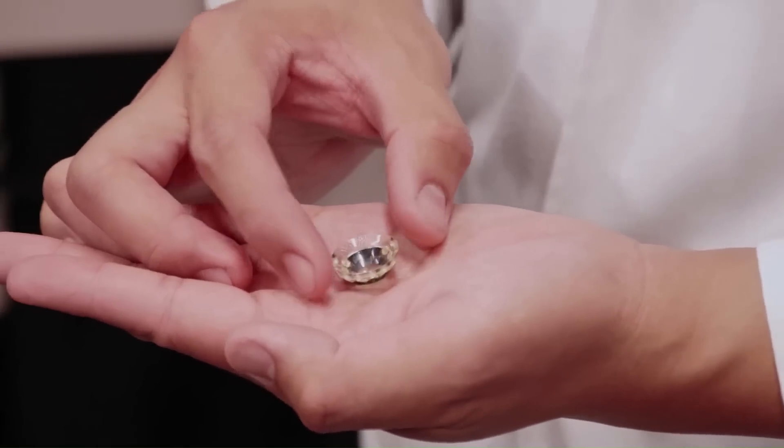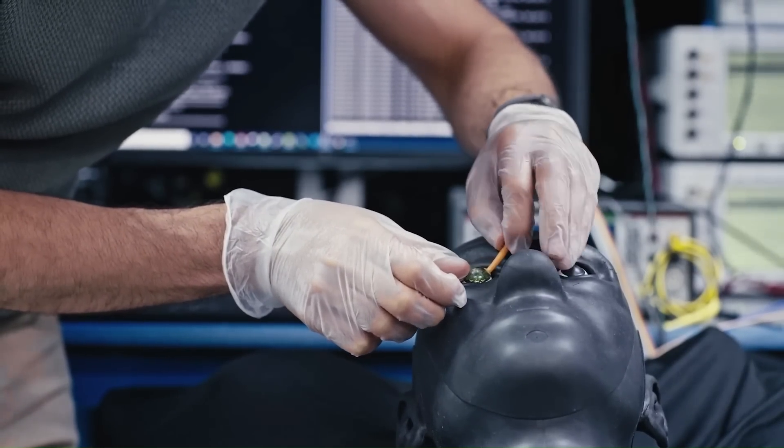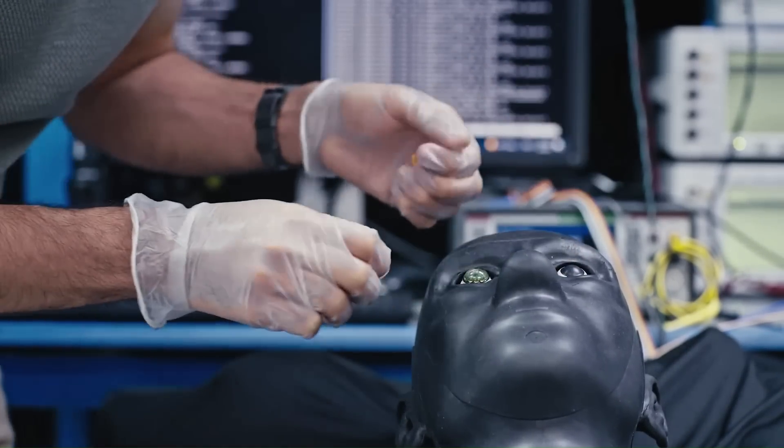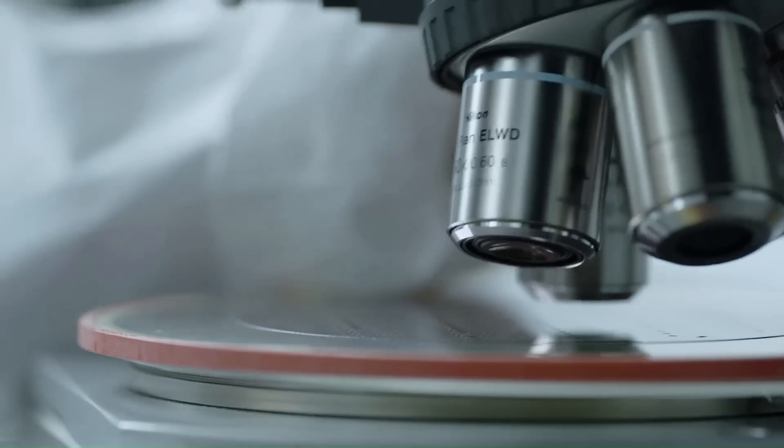Mojo Lens' revolutionary design uses a tiny micro-LED display the size of a grain of sand to share critical information and smart sensors powered by solid-state batteries built into a scleral lens that also corrects your vision.